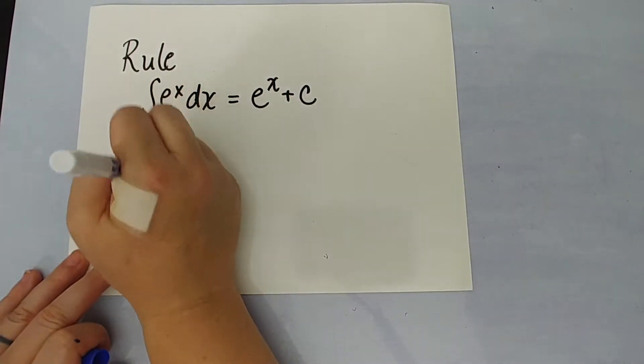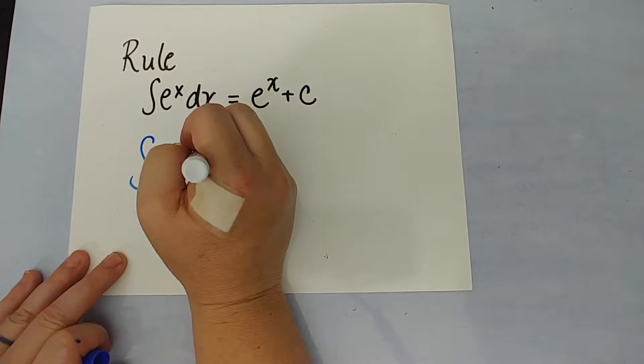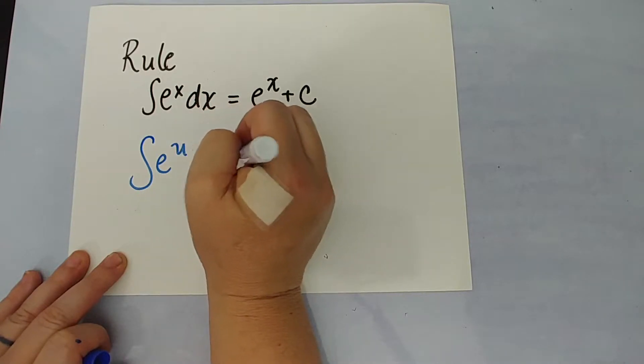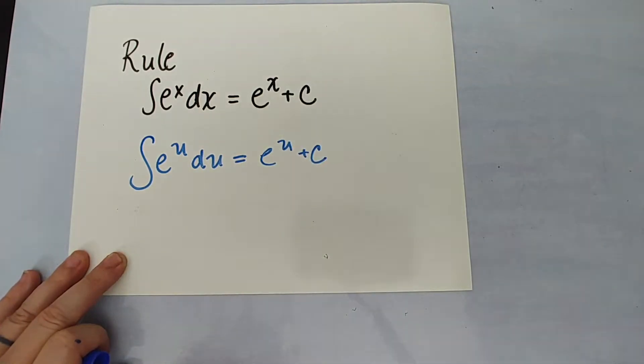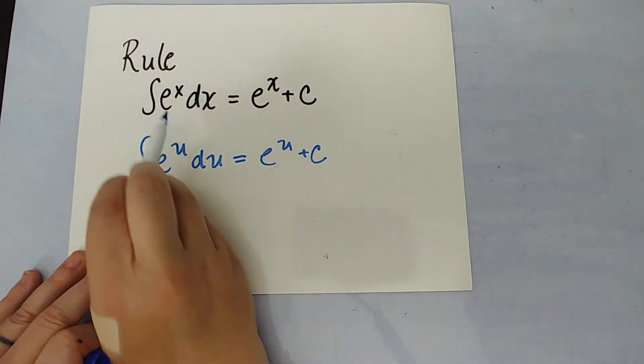So the rule here then would state that e to the u, du would simply be what? e to the u plus c. It doesn't change if I change the variable.